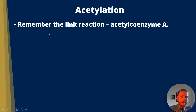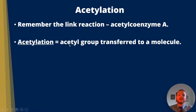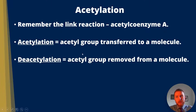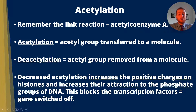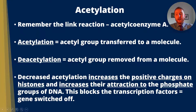On acetylation — remember acetyl coenzyme A from the link reaction. Acetylation is where an acetyl group is transferred to a molecule, and deacetylation is where an acetyl group is removed from a molecule. Decreased acetylation increases the positive charges on histones. DNA is a negatively charged molecule because of phosphate, so the positively charged histone will be attracted to the negative DNA, they'll associate more strongly, and that's going to coil the DNA up. The positive charges on histones increase their attraction to the phosphate groups of DNA, blocking transcription factors and switching genes off.